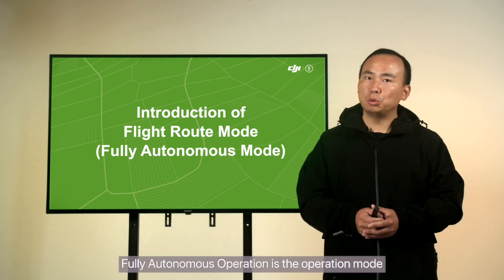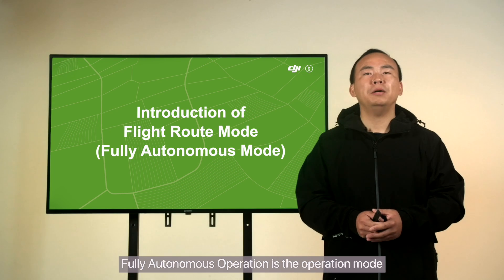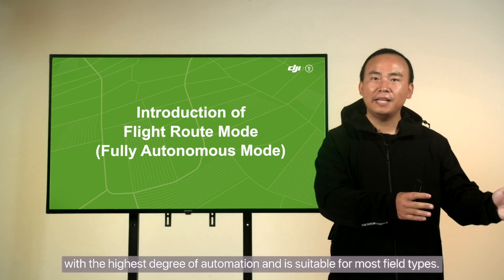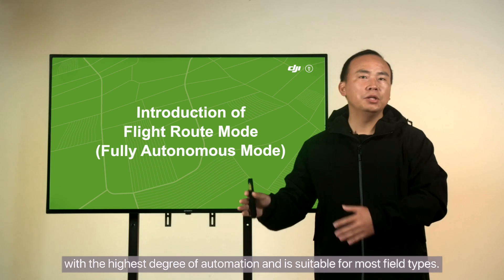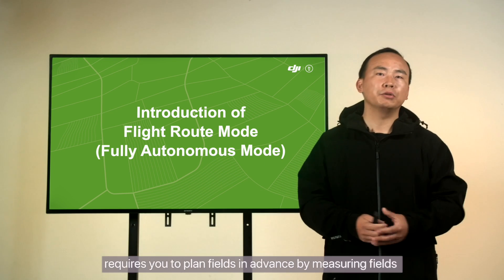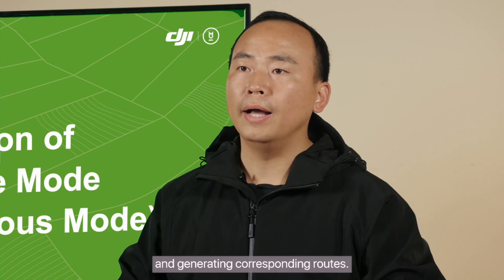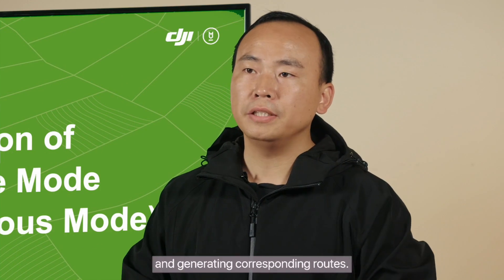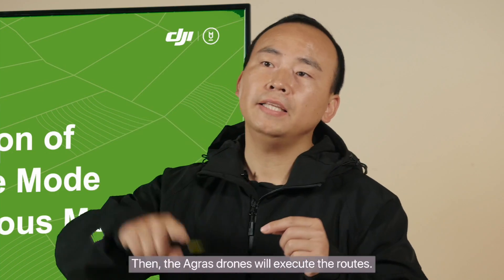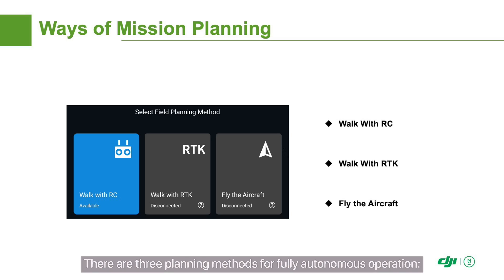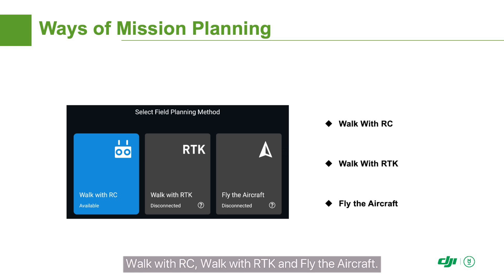Fully autonomous operation is the operation mode with the highest degree of automation and is suitable for most yield types. It requires you to plan fields in advance by measuring fields and generating corresponding routes, which the Agris drones will then execute. There are three planning methods for fully autonomous operation: Walk with RC, Walk with RTK, and Fly the Aircraft.